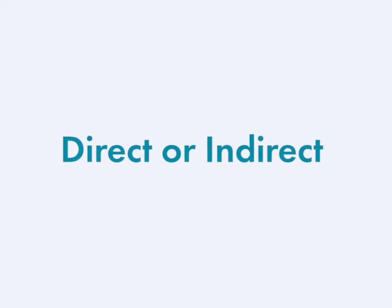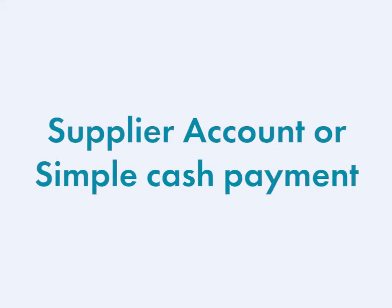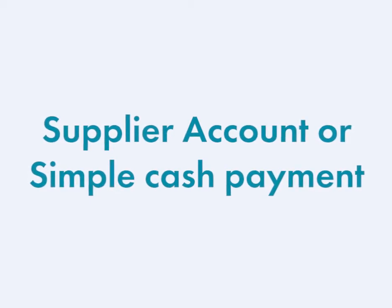Indirect expenses are for overheads such as insurance, heating costs, advertising, and so on. The second question you should ask is whether you need the purchase linked to the supplier or whether to treat it as a simple cash payment at the point of purchase. If what you've bought is from someone you buy from regularly, or if they